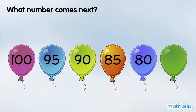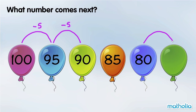What number comes next? 100 minus 5 is 95. 95 minus 5 is 90. In each step, the numbers go down by 5. 80 minus 5 is 75. The next number is 75.